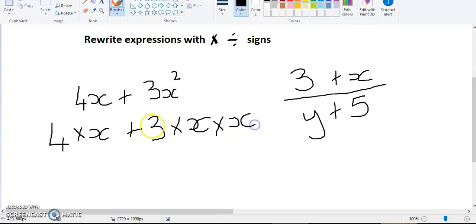Now if we think about order of operation, we always do multiply before addition. So we'll always do 4 times x first and we'll always do 3 times x times x first before we add them. So we don't need any brackets.